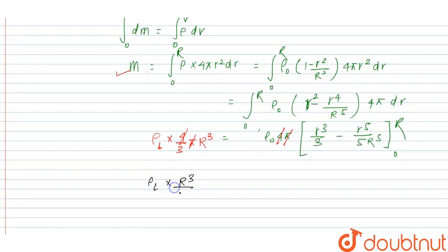The 4π cancels. Density of liquid times R³/3 equals ρ₀ times (R³/3 - R⁵/(5R⁵)). When we solve by dividing by R³/3...